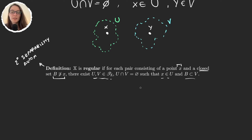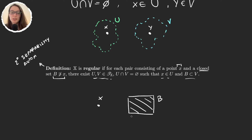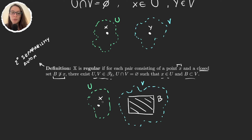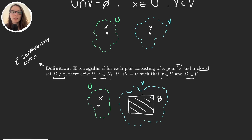The typical picture to think about for regular spaces is the following: we have one point X in the space and a closed set B that doesn't contain X. So if our space is regular, we will be able to find two open sets B and U that are separating the point from the closed set.